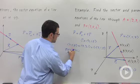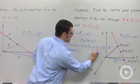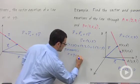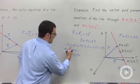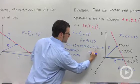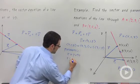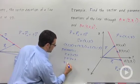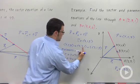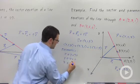x equals 2 plus 3t, y equals 3 plus t, and z equals 1 plus 5t.